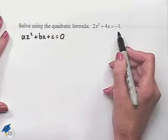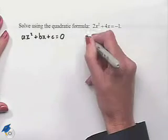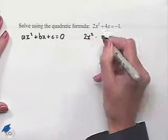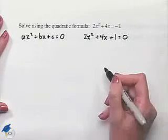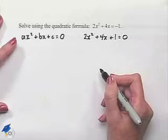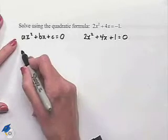Therefore, we're going to begin this problem by adding 1 to both sides of the equation in order to set it equal to 0. We'll have 2x squared plus 4x plus 1 equals 0.